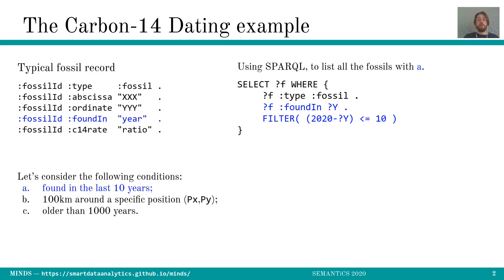If now we want to comply with the first condition we just need to look at the found in predicate and then build a filter. So the filter would be the difference between the current year 2020 and the year of discovery y and we want it to be less than or equal to 10.